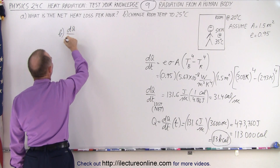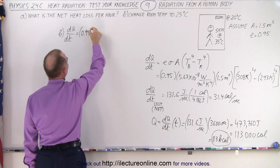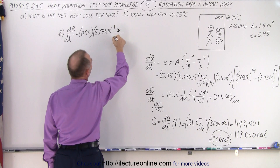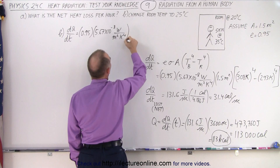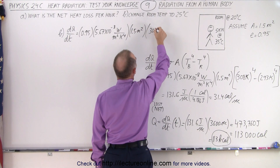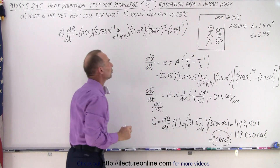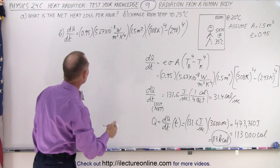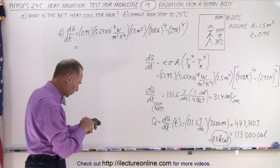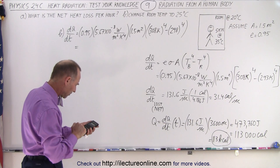But what would the number be if we change the room temperature to 25 degrees? So let's do the dQ/dt again. We're going to plug in the numbers and change the temperature of the room: it's still 0.95, still the constant 5.67 times 10 to the minus 8 watts per meter squared per Kelvin to the fourth power, times 1.5 meters squared. The body temperature stays at 308 Kelvin to the fourth power, but now the room temperature is 25 plus 273 equals 298, so we subtract 298 to the fourth power.